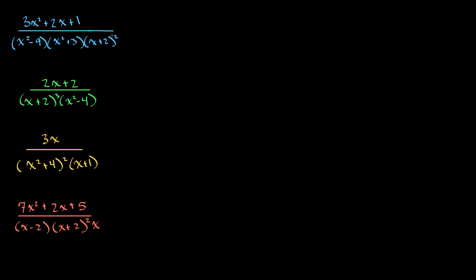Because once we have the setup, we can either use cover-up or clear some denominators and set up coefficient equations, and then solving for those variables becomes a little easier, and then we can just throw what we have into an integral, and that integral becomes very easy to solve. So the hard part is just the setup. If we can set these up right, we can solve for all the variables that we need to.